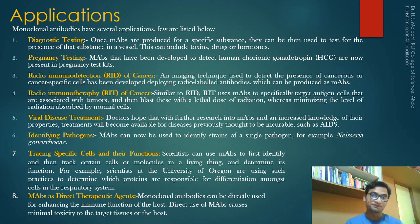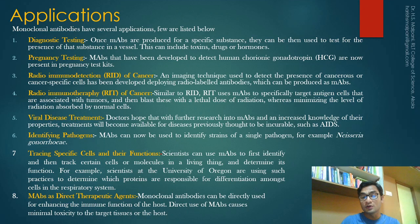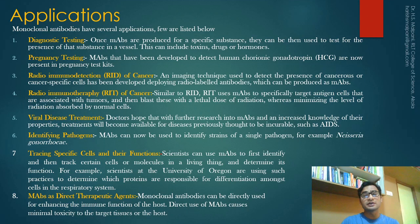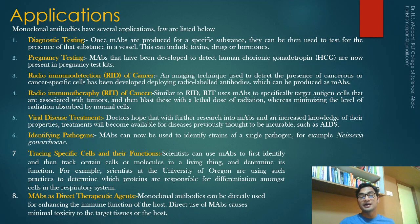Seventh is tracing specific cells and their functions — scientists can use monoclonal antibodies to identify and track certain cells or molecules in a living organism and determine their function. For example, scientists at the University of Oregon are using such practices to determine which proteins are responsible for differentiation among cells in the respiratory system. The eighth application is as a direct therapeutic agent: in passive immunity, antibodies are directly administered. Monoclonal antibodies can be used directly for enhancing immune function of the host, causing minimal toxicity to target tissue.